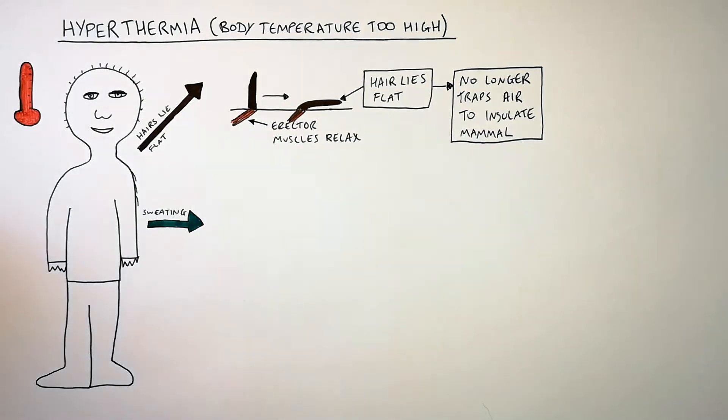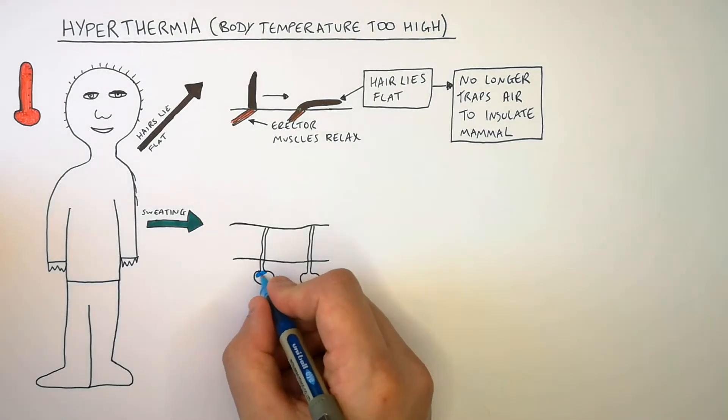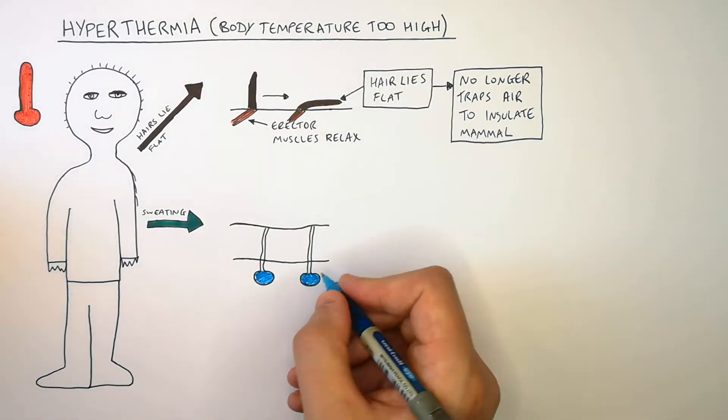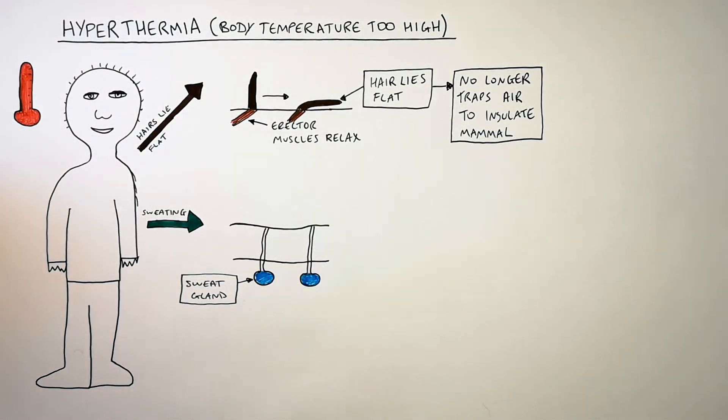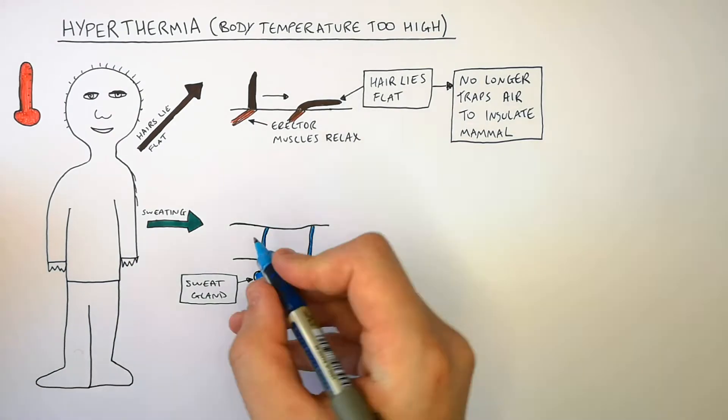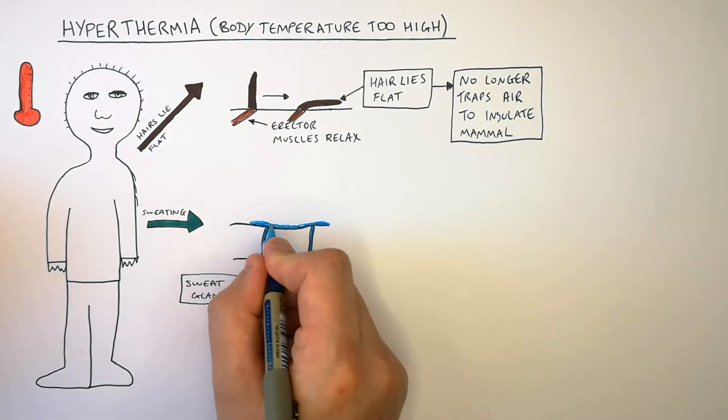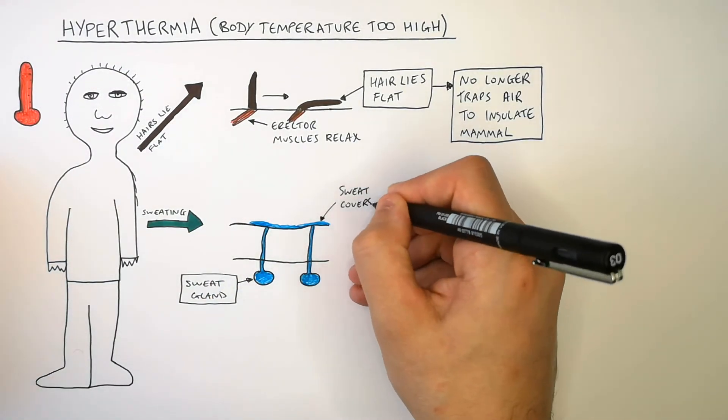So when it's too hot we undergo sweating. Beneath the surface of the skin we have sweat glands. Sweat glands produce and release sweat onto our skin. So when we get too hot sweat is released onto the surface of our skin which will then cover the skin.